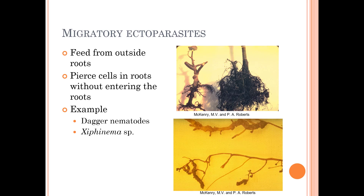There are different types. Migratory ectoparasites feed from the outside of the roots. They pierce cells in roots without entering the roots, and they may attack one root in several places — they don't necessarily stay in one place. An example of that is the dagger nematode. In this photo at the top is a rose: on the right we have healthy roots, and on the left we have dagger nematode-infested roots, which you can see are not healthy at all. At the bottom, we have Xiphinema index gall on grape roots.